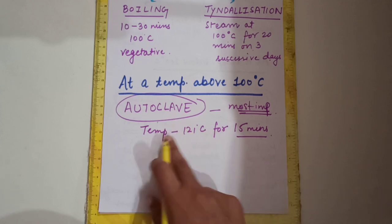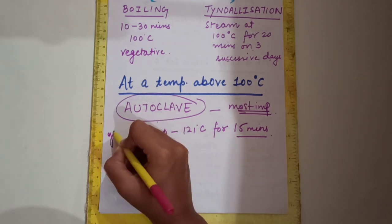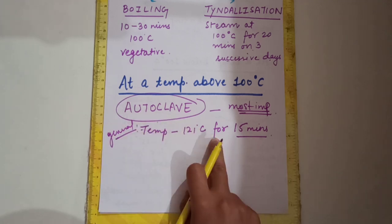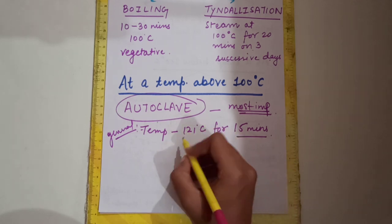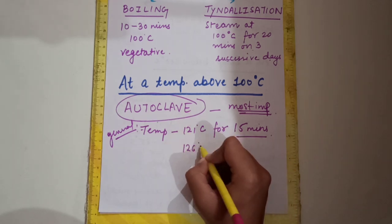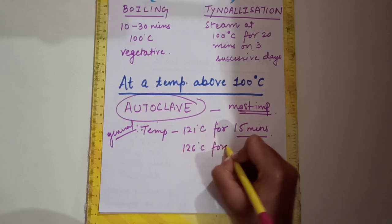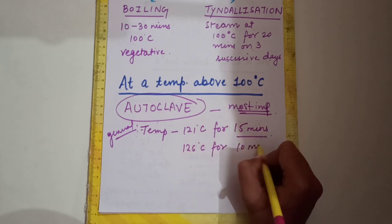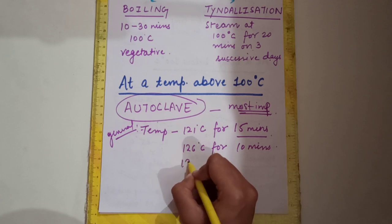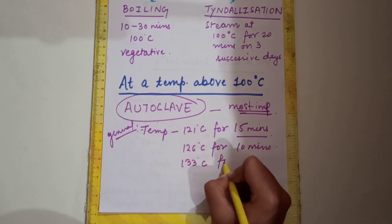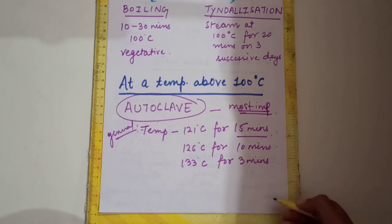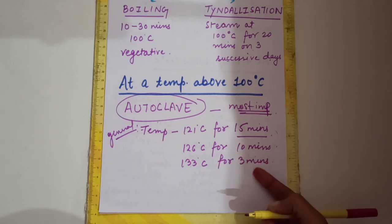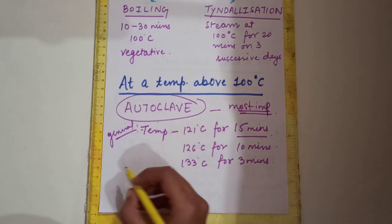While 121°C for 15 minutes is the general standard, under certain conditions higher temperatures can be used: 126 degrees Celsius for 10 minutes, or 133 degrees Celsius for 3 minutes. The temperature used depends on the material being sterilized.